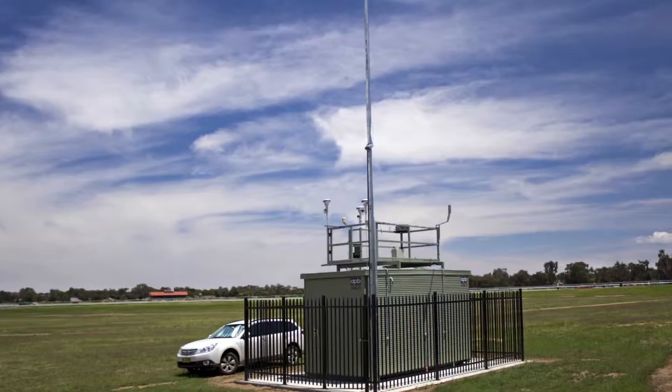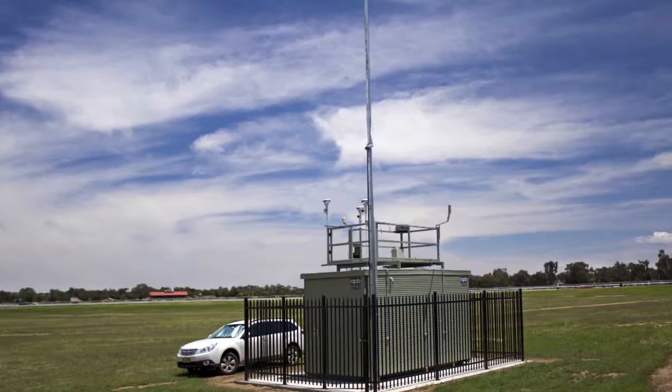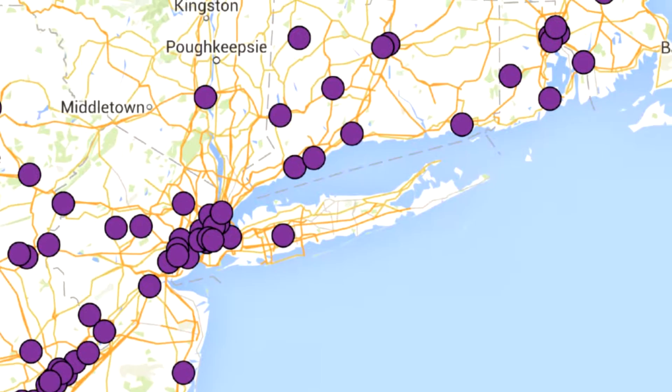In order to assess exposures around the United States, the Environmental Protection Agency set up a number of air pollution monitors in different locations in both urban and rural areas. And what we do is we link the concentrations that are measured at these external air pollution monitors to people's residences.